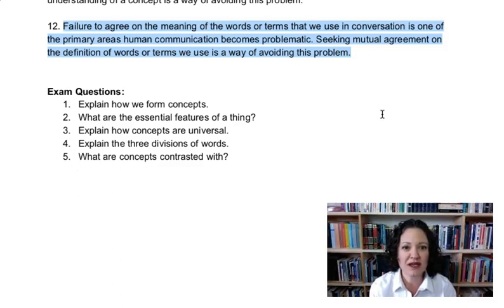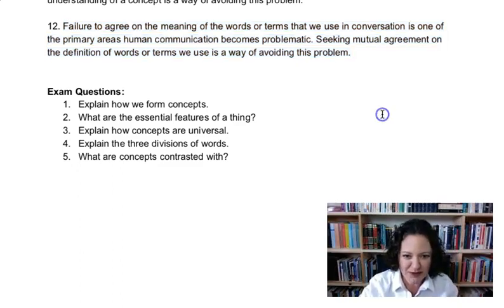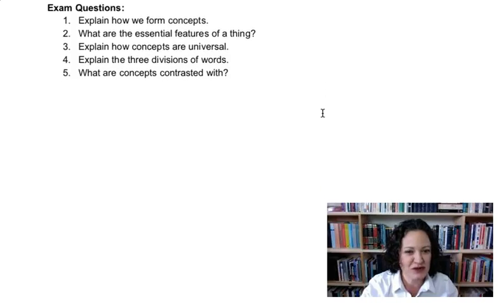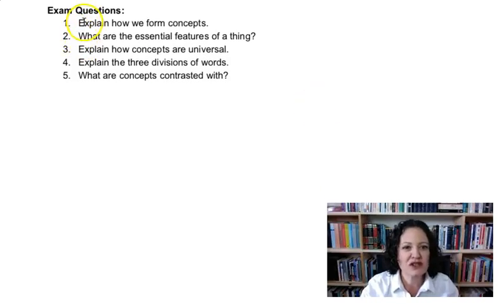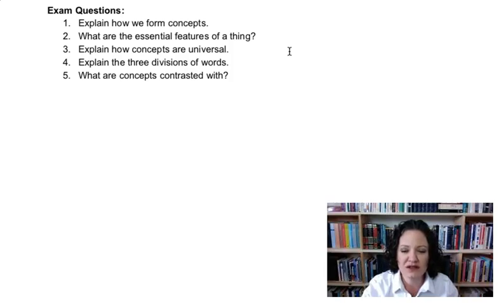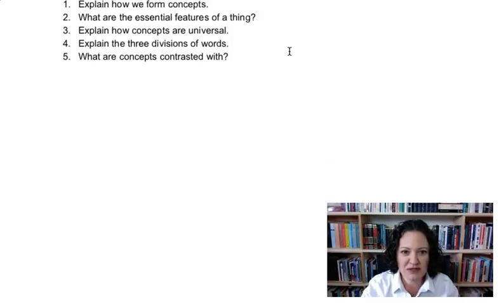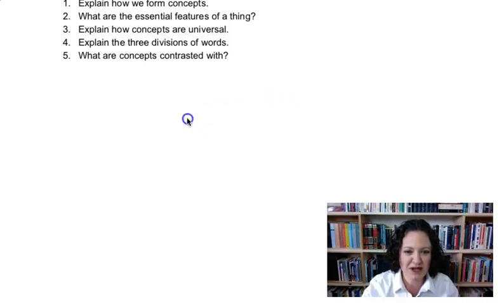Before we get to whether animals think, let's look at what you should be able to take from this discussion: explain how we form concepts, explain the essential features of a thing, explain how concepts are universal, explain the three divisions of words, and explain what concepts are contrasted with — what they are not. Now I'm going to present you with an argument, so hold it in your mind.